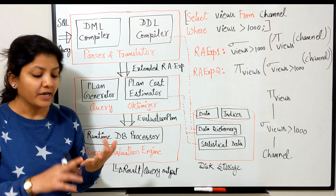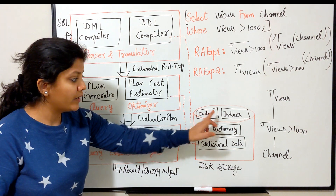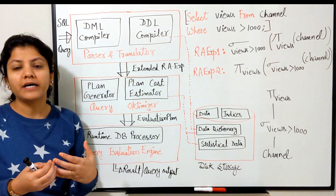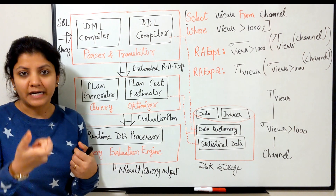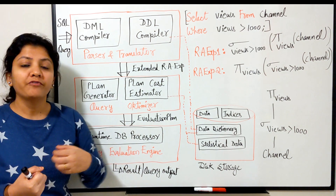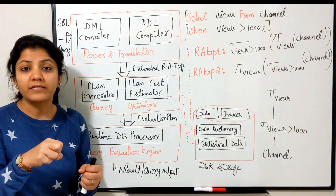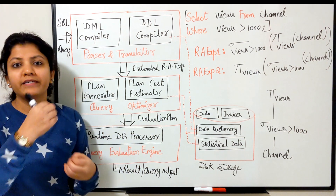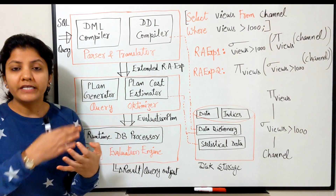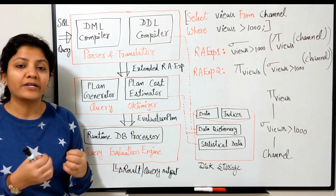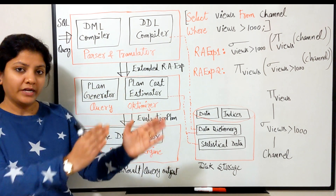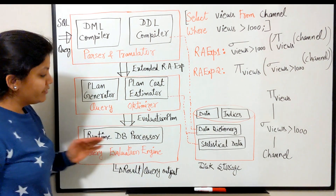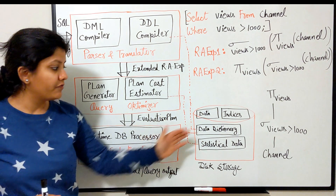The data dictionary stores information about each and every relation and index file. We also have statistical data — statistics used to estimate cost, such as how many block accesses we need to make. This includes a relation's cardinality, the number of tuples for a particular relation, the depth of the B-tree, the order of the B-tree — all data required for analysis before choosing a particular algorithm or execution strategy. This storage is in total connection with all blocks in the diagram; whichever part requires data will fetch and access it from here.